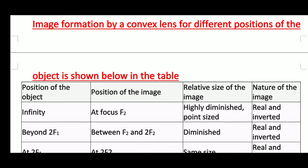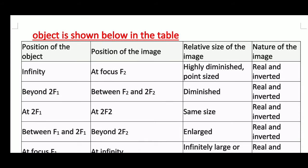First we will discuss the tabular form. When the position of the object is at infinity, the image will be at focus. The relative size of the image will be highly diminished or point-sized, and the nature of the image will be real and inverted. Second, when the object is beyond 2f1, the image will be between f2 and 2f2, the size will be diminished, and the nature of the image will be real and inverted.